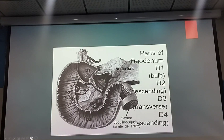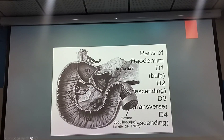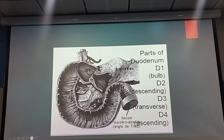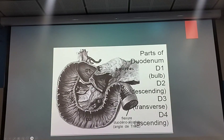The duodenum has four parts. D1 is the upper part, D2 is the vertical part, D3 is the horizontal part, and again it turns to the left — that is D4. Then comes the DJ junction, the DJ flexure.